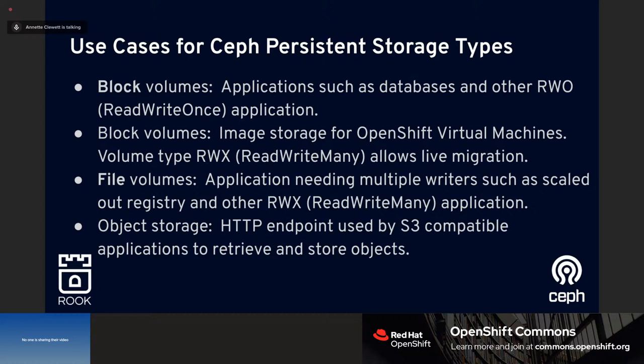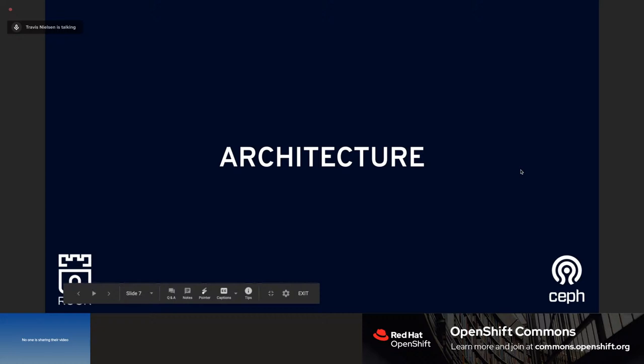What makes Ceph really unique is that it provides all three storage interfaces - block, file system, and object - where typically you would see software doing only block, or only file system, or only object. Being able to do it with a single storage system with Ceph is really powerful and proven powerful in the community. Now we're diving into the architecture to show the next level of what we're talking about.